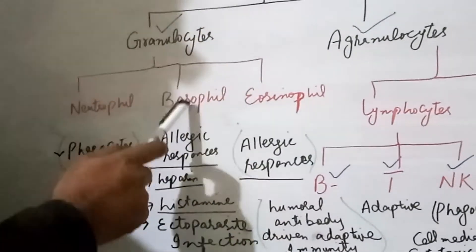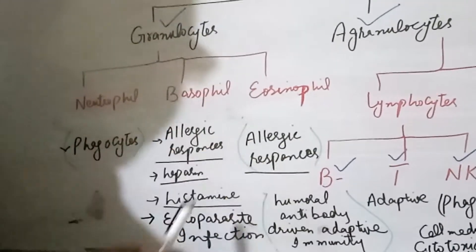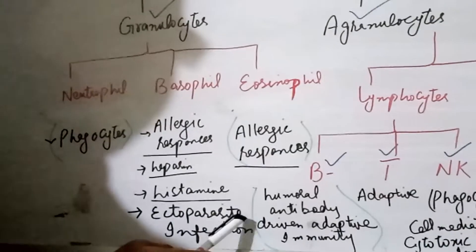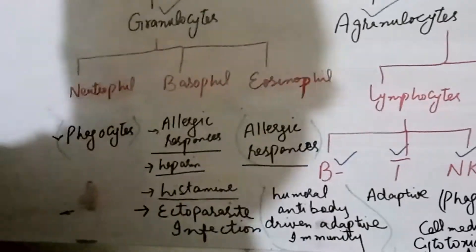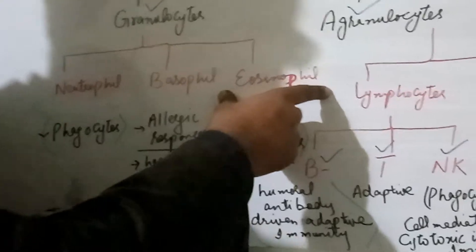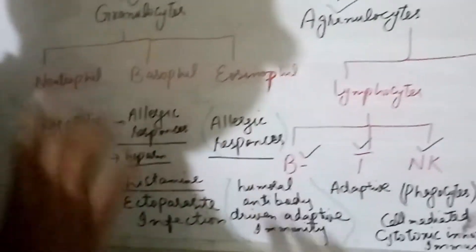And they also, basophils are commonly present at the site which is infected by the ectoparasites. There is a third type which is eosinophil and these are present basically at the allergic response.